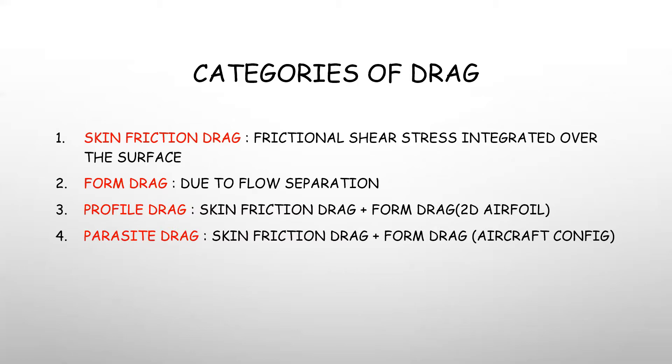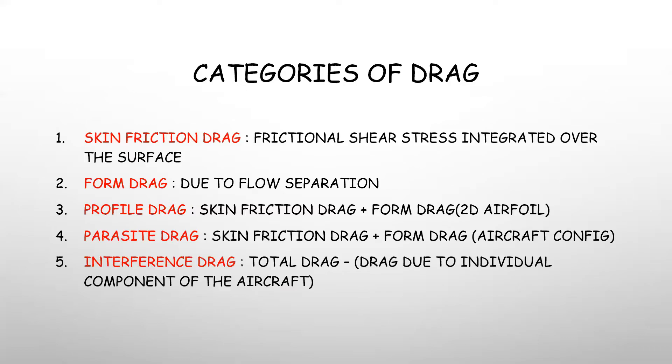The same term for the complete aircraft would be parasite drag, which is skin friction drag plus form drag for the aircraft configuration and interference drag. This is a bit tricky. If you were to design the wings separately, tail separately, and measure the drag for each one, then finally integrate to become an aircraft and measure the drag, the drag won't be the same. Total drag minus drag due to the individual components - there will be some difference, and that difference is what interference drag is.